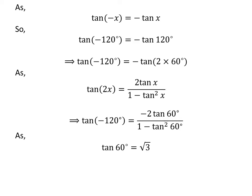We know the value of tangent of 60 degrees is equal to square root of 3. Plugging the above value into the expression for tangent of minus 120 degrees, we get tangent of minus 120 degrees is equal to minus 2 times square root of 3 upon 1 minus square of square root of 3.